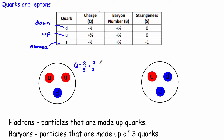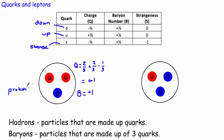The down quark has a charge of minus one third, so taking that into account: plus two thirds, plus two thirds, minus one third adds up to a charge of plus one. If we think about the baryon number — an up quark has a baryon number of plus one third, and so does the other up quark, and the down quark, giving a total baryon number of plus one. So because this has a baryon number of plus one we say this is a baryon — and it's a baryon with a charge of plus one. In fact, this is the proton.